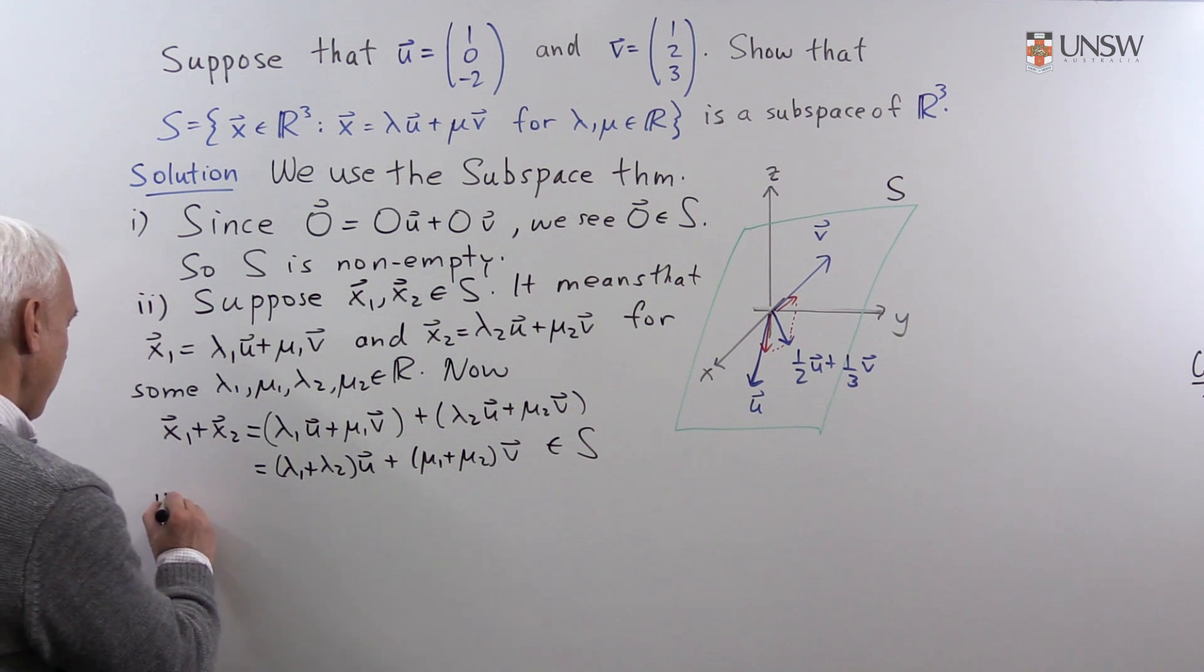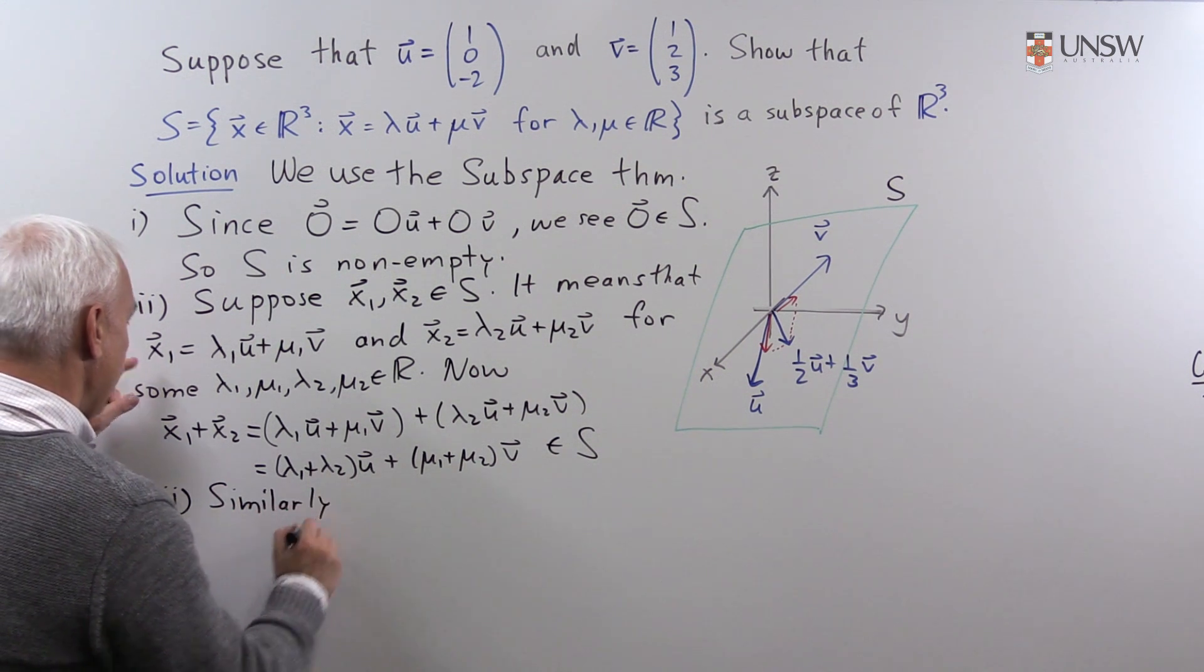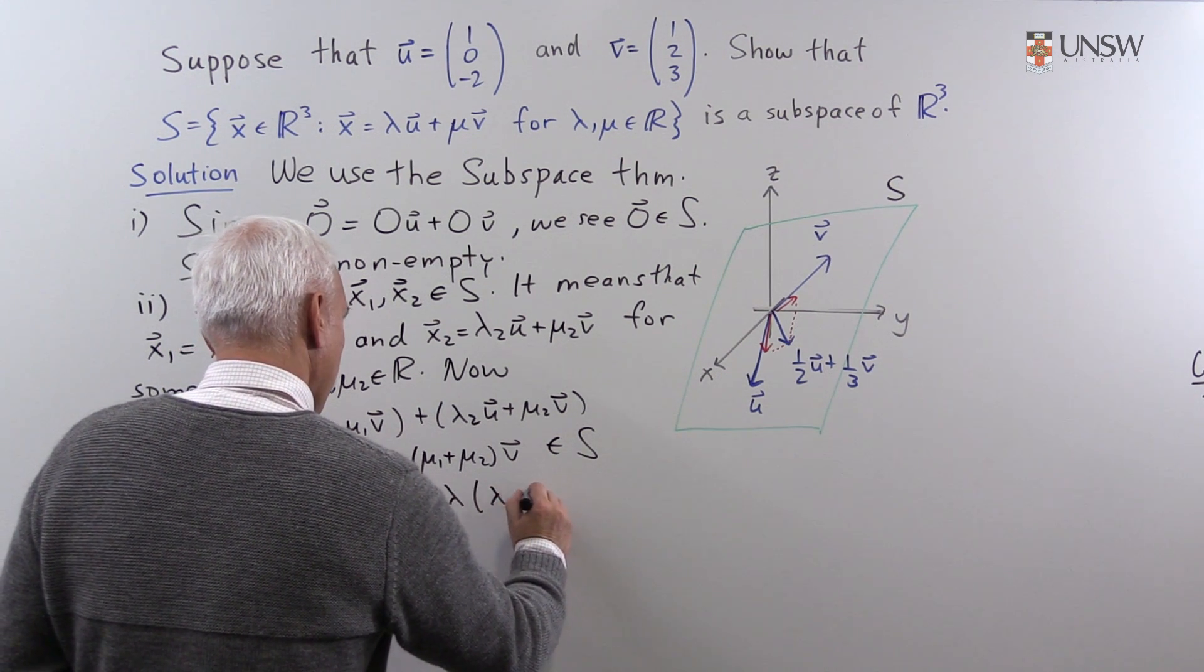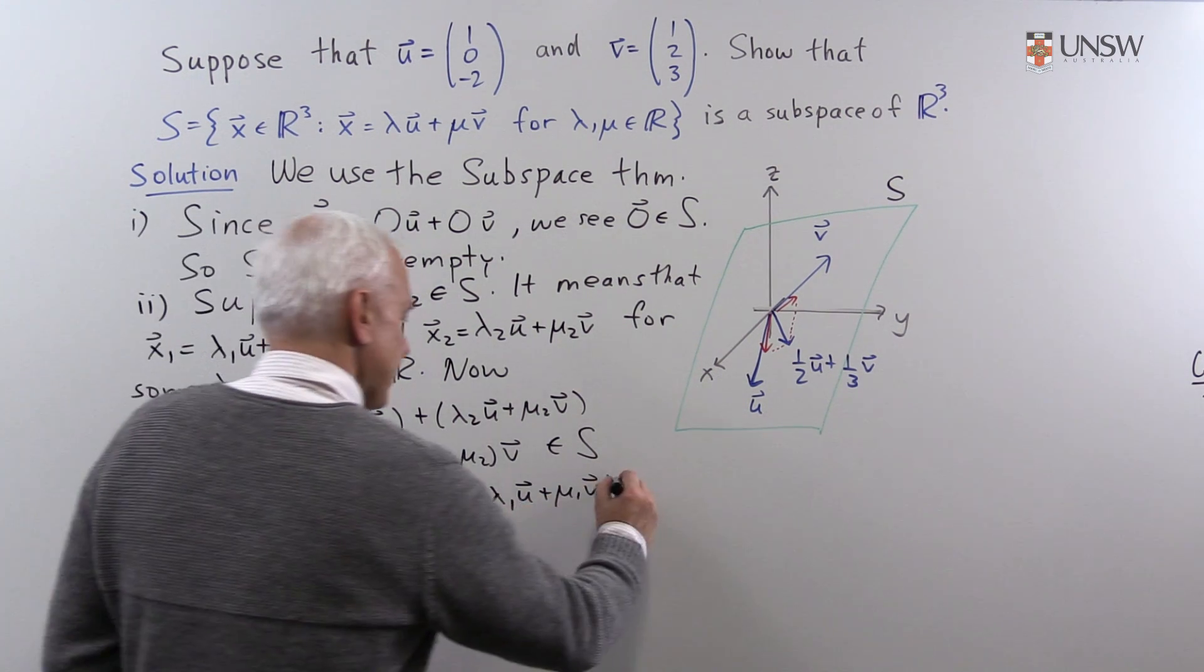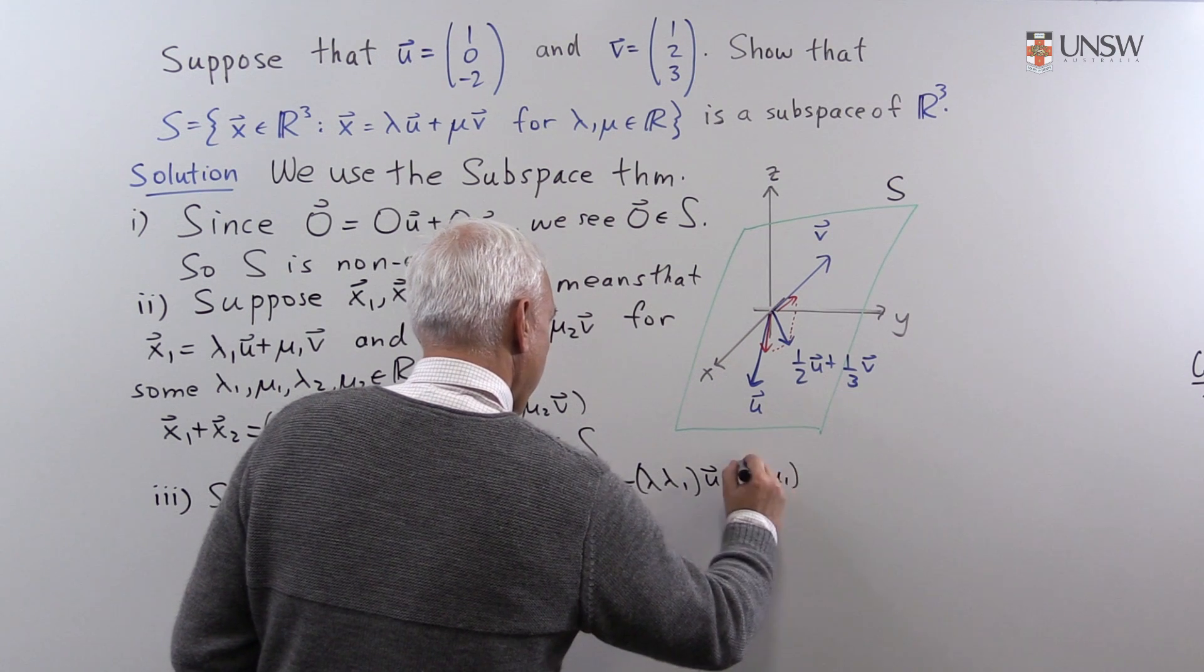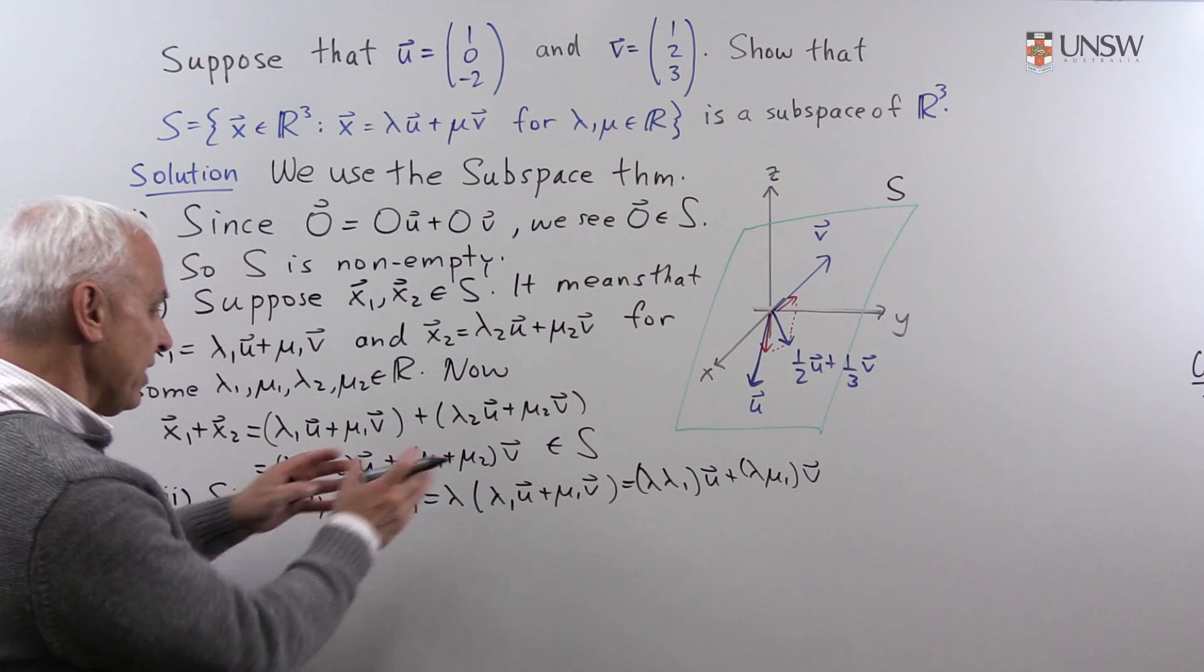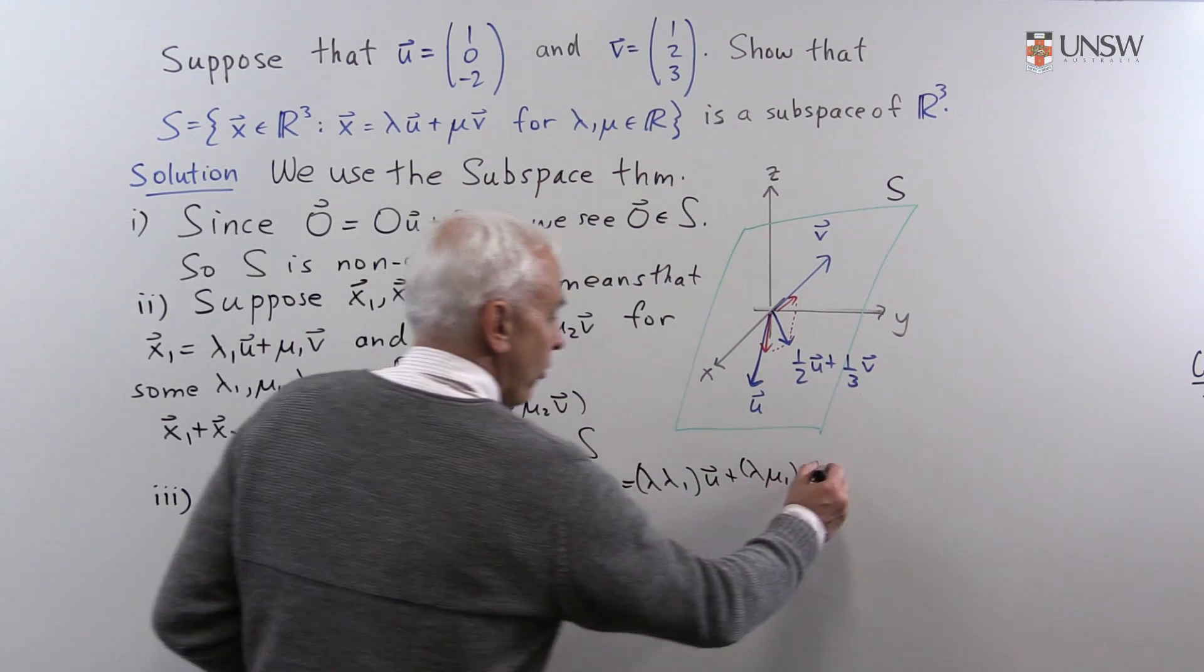And similarly, if we have a look at the same vector x₁ and we multiply that vector x₁ by λ, then we get λ times (λ₁u plus μ₁v). And that's then λ times λ₁u plus λ times μ₁v. Again, because of the distributivity of the scalar multiplication. And when we've written it that way, we see we have again a multiple of u and a multiple of v added together. So this is also in S.